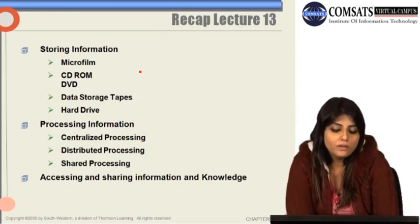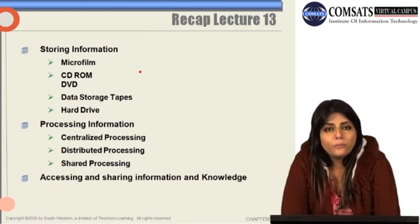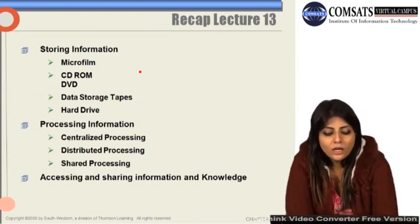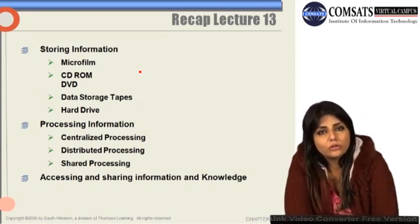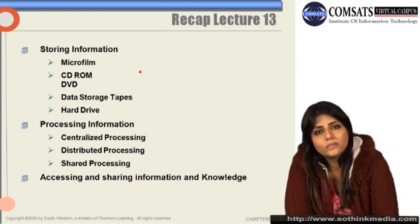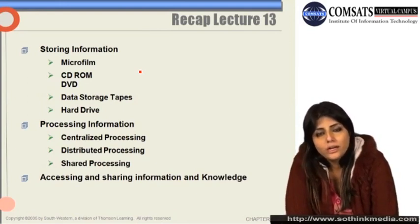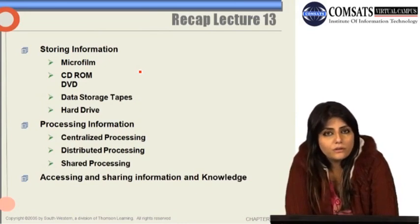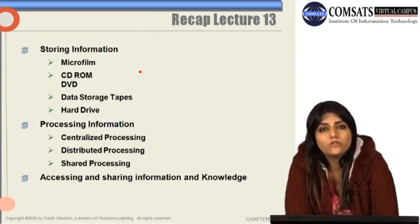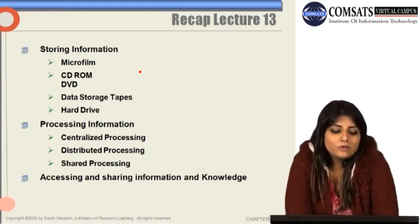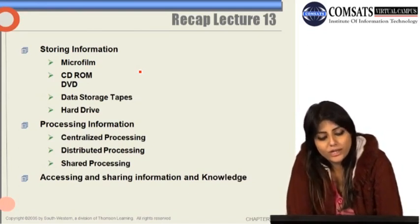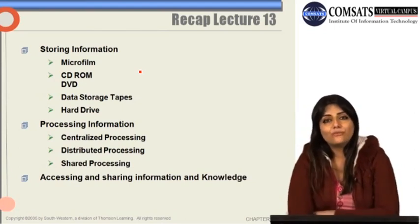We saw that companies normally use three different ways of processing information: centralized processing, distributed processing, and shared processing. Centralized processing is done through mainframes; distributed processing through individual desktop computers assigned to each individual; and shared processing through network servers. Large companies use mainframes because they have huge amounts of data to process, while smaller companies rely more on distributed and shared processing. Large companies often use a combination of all three types.